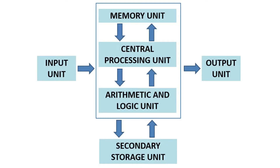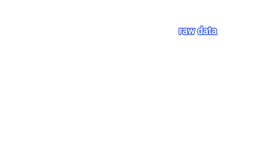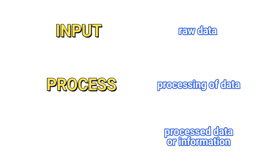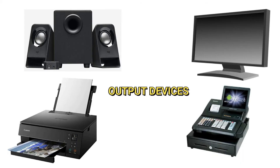The next unit is the output unit, which is considered the shipping section. Once the data — or what we call the input — is already processed, it is now ready to be shipped or given back to the user as processed data or information. Raw data, which serves as our input, once processed by the computer, now becomes processed data or information and is considered our output. It may either be displayed on the monitor screen, printed on paper, or played on audio players or used to control other devices.